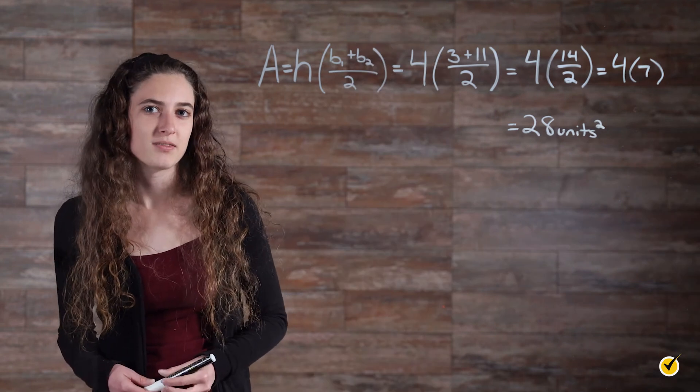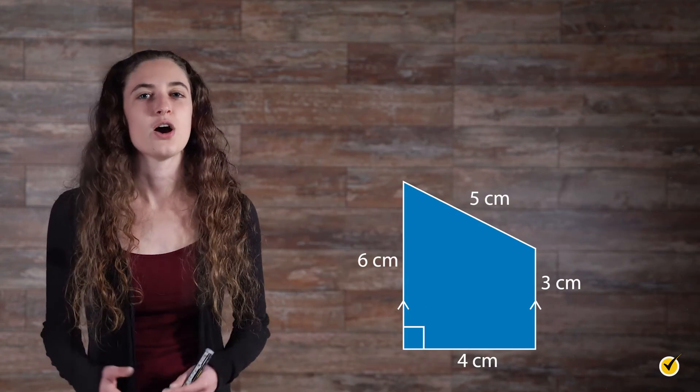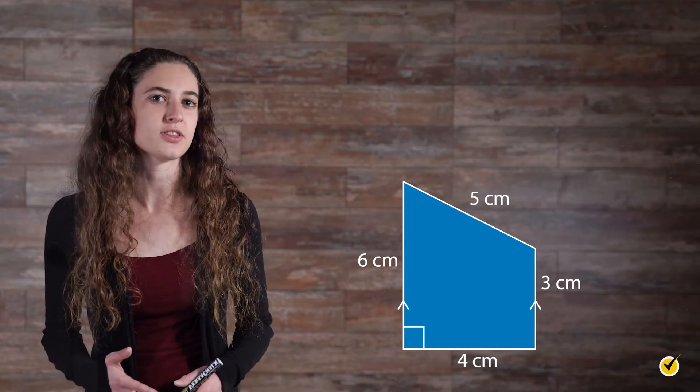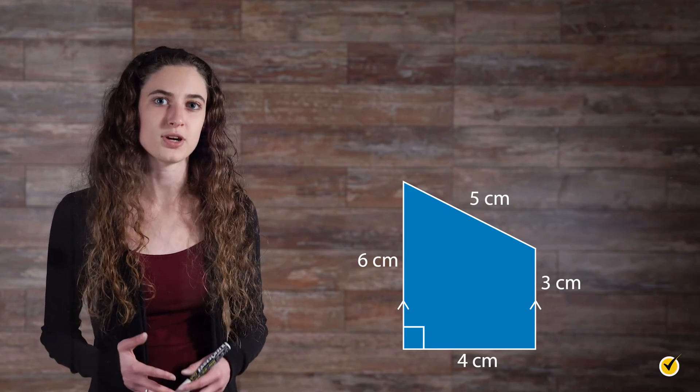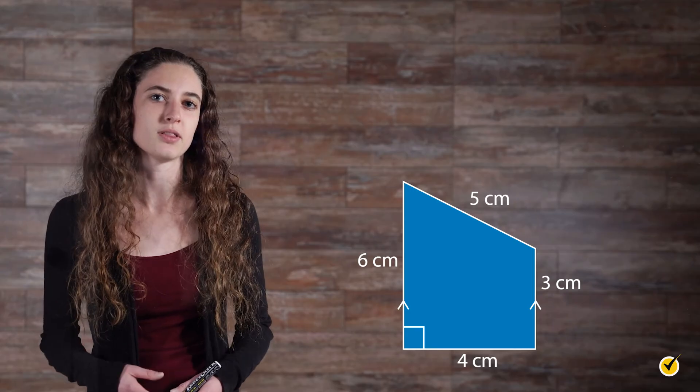That's the same answer we got when we counted. So let's try another one. It looks a little bit different than the trapezoid we just did, but we can tell it's a trapezoid because it has one set of parallel sides.